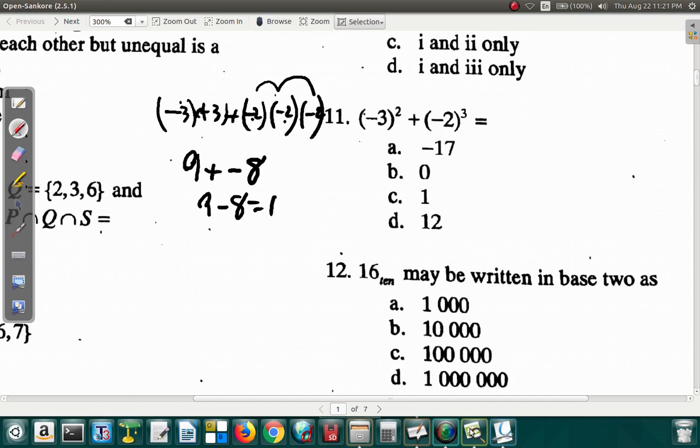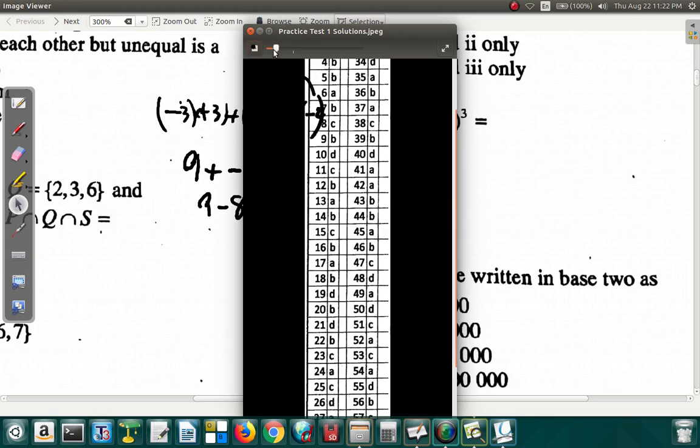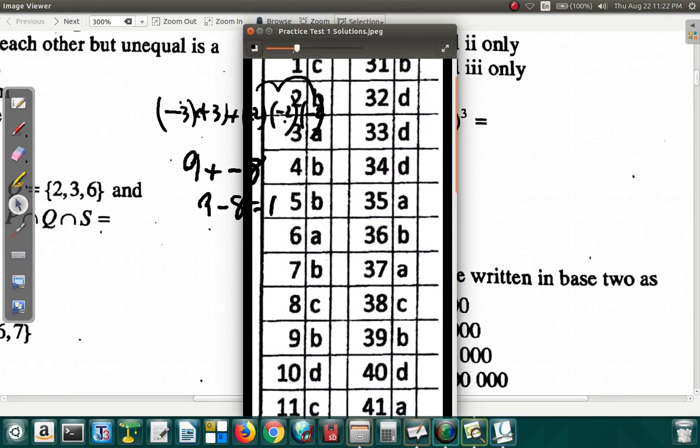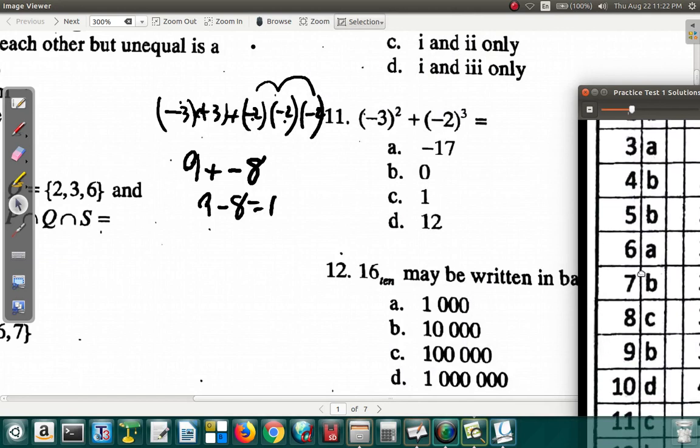So 9 plus negative 8 is the same as 9 minus 8, which is 1. So question 11 is C. Let me locate the answer for question 11. It's C.